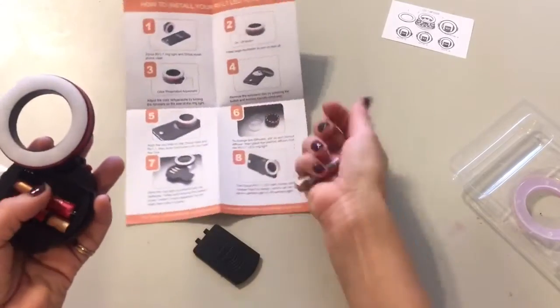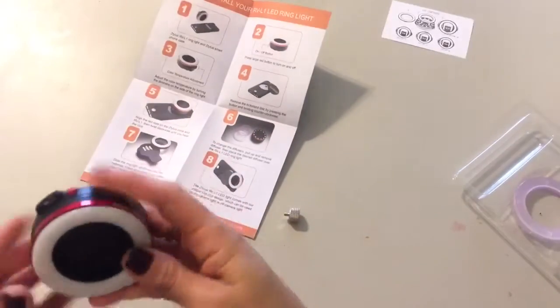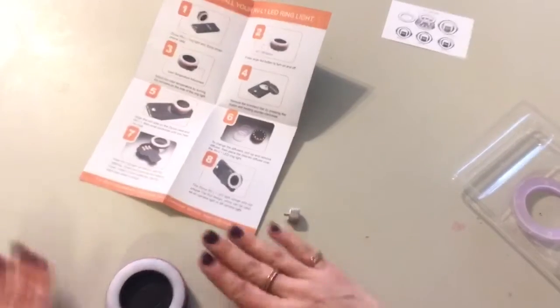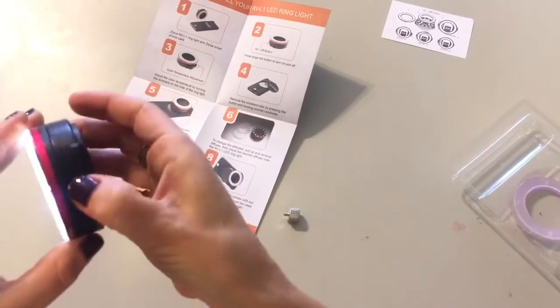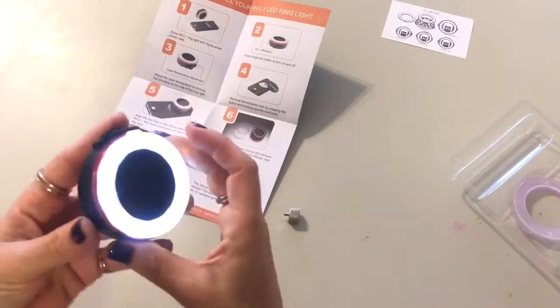Let me take this bad boy for a test drive. All right, drumroll please. And then it says that this is the on-off button to turn it away from you so it does not blind you. Wow, that thing is really bright.